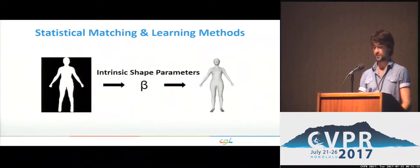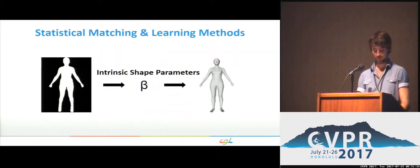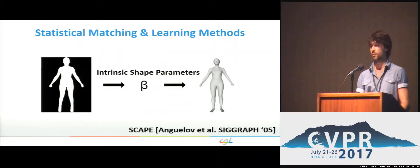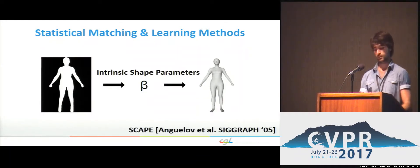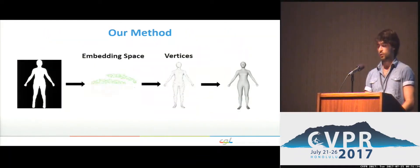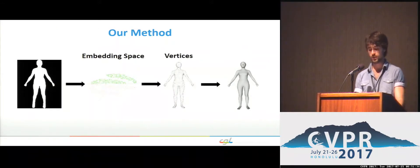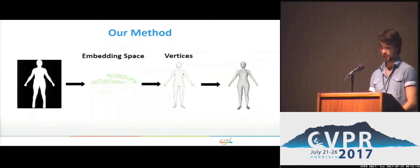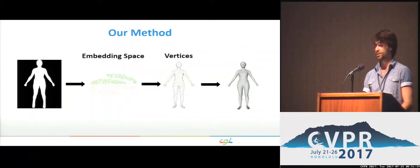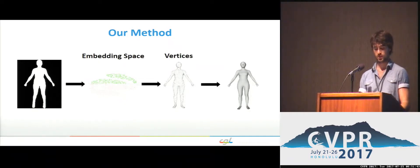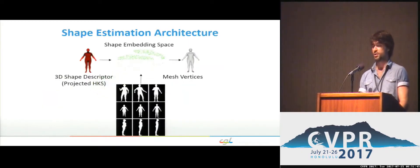Almost all previous methods find the mapping from silhouettes to parameters of a statistical shape model learned from body scans, utilizing the SCAPE model. A least squares system is then solved to obtain the final mesh. We, on the other hand, map silhouettes to a learned embedding space based on heat kernel descriptors, which regresses to full vertex positions to obtain the mesh. In this work, shape estimation is achieved with the help of a novel synergy-based architecture consisting of three main components.